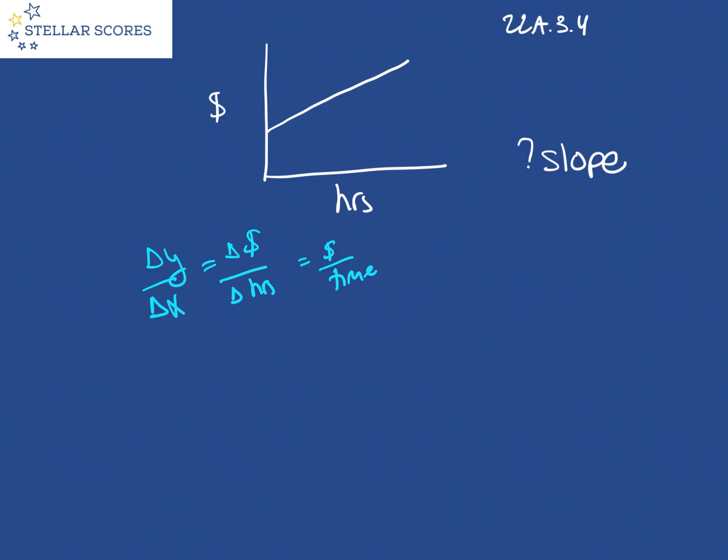So that's what slope is, the amount of money he charges per every unit of time. In other words, his hourly rate. So that is going to be choice A.